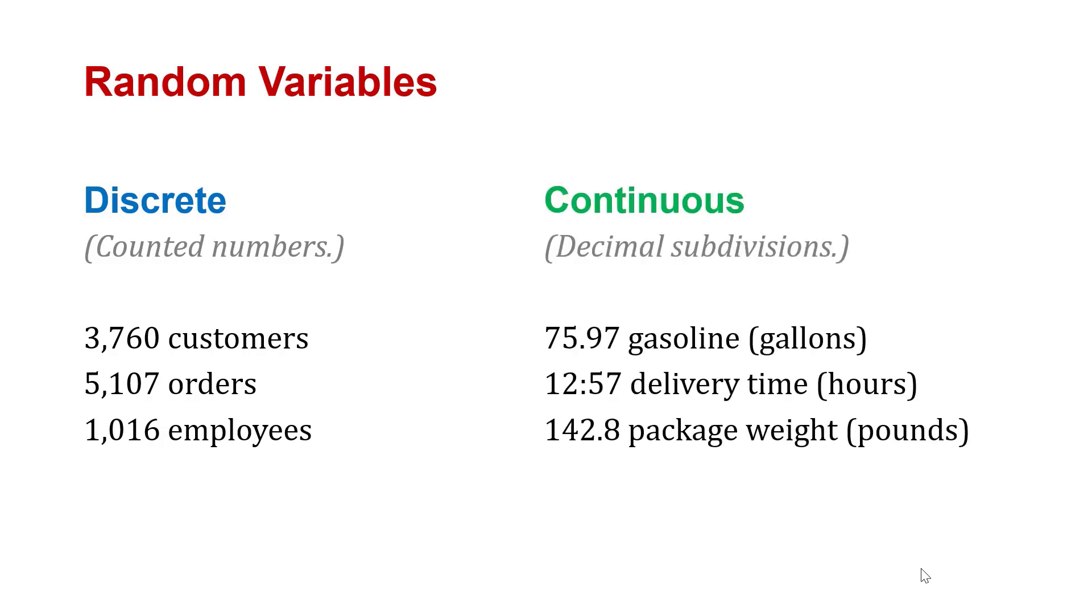When we talk about random variables, we could have discrete random variables, which are counted numbers like 3,760 customers or 5,107 orders. Then there are continuous random variables, which have an infinite number of possible decimal subdivisions, like 75.97 gallons of gasoline, or delivery time being 12 hours 57 minutes, or package weight in pounds or kilograms. These things could have an infinite number of decimal subdivisions, at least within a given range.